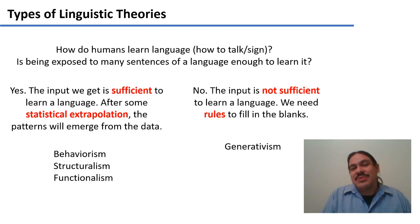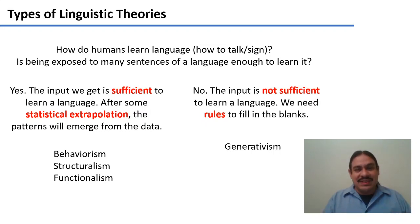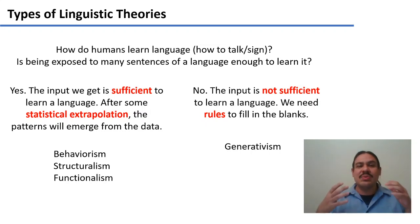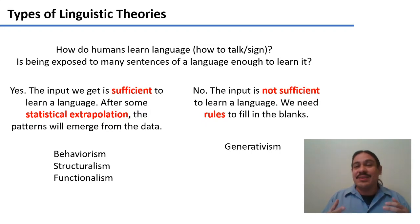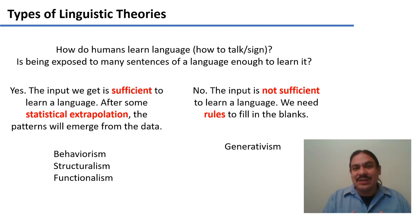The main question is whether being exposed to many sentences of a language is enough to learn the language. This is particularly important for babies — if you talk enough of a language to a baby, what are they going to do with that? In reality, babies learn language almost miraculously; in two to three years, they're speaking a language. The main question in psycholinguistics is: is being exposed to many sentences enough to learn a language?